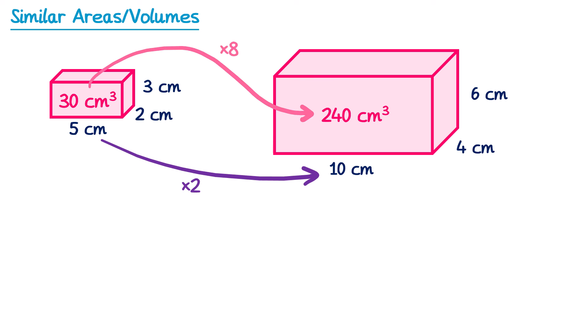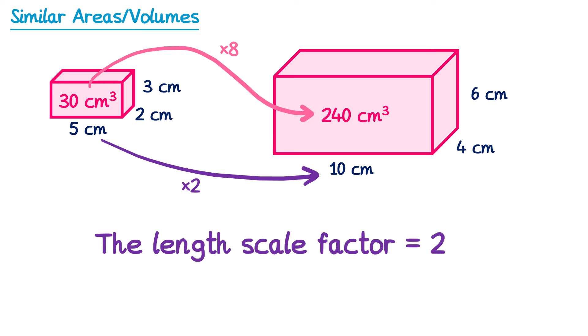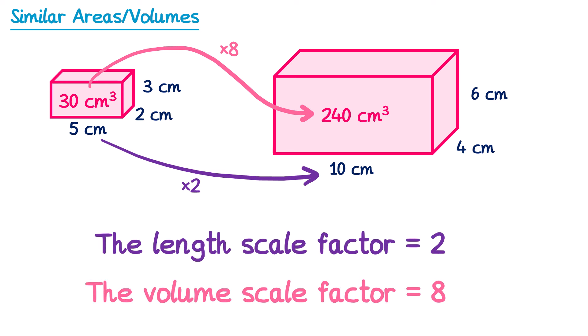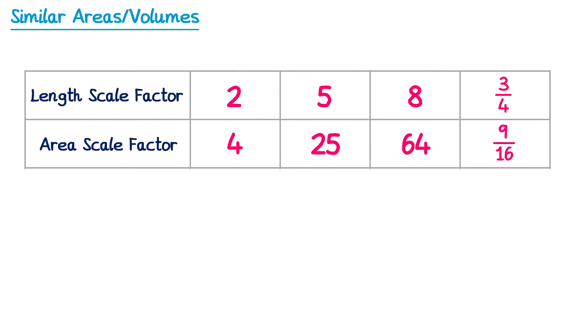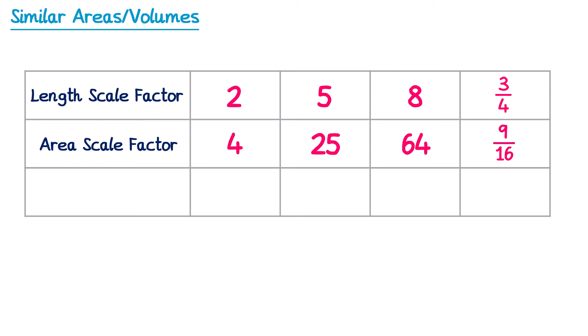30 times 8 gives you 240. So for this one the length scale factor is 2 and the volume scale factor is 8. This 8 comes from multiplying 2 by itself 3 times, or 2 to the power 3. So if we know the length scale factor we can work out the volume scale factor by cubing it. Let's return to that table and add in the volume scale factor — to find it we cube the length scale factor. For a length scale factor of 2, the volume scale factor is 2 to the power 3, which is 2×2×2 = 8.